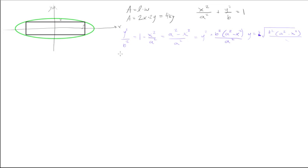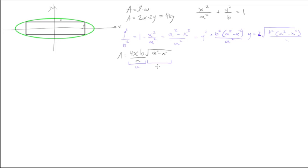Now we can rewrite our area equation for the rectangle by substituting in this new value for y. The area of the rectangle is still equal to 4x, but instead of y we now have b√(a² − x²) all over a. If we rearrange this slightly, putting b/a out front, this sets up our u and v for the product rule in the next step.